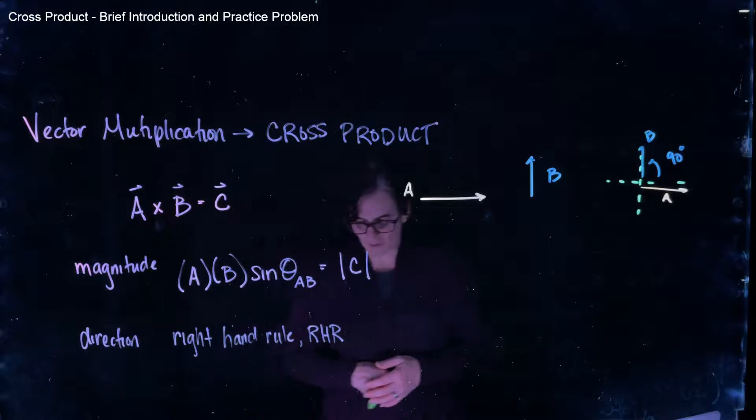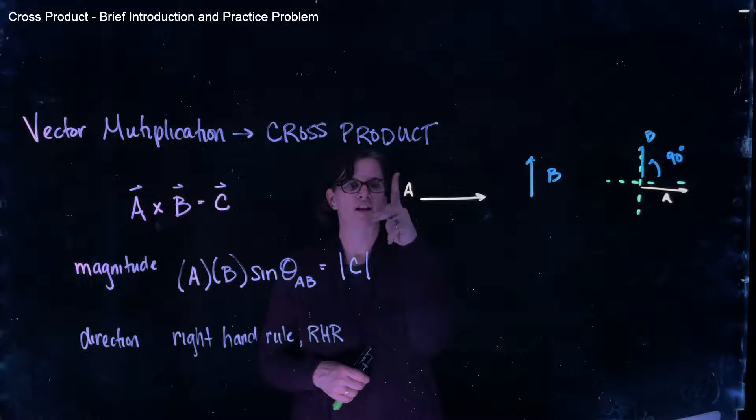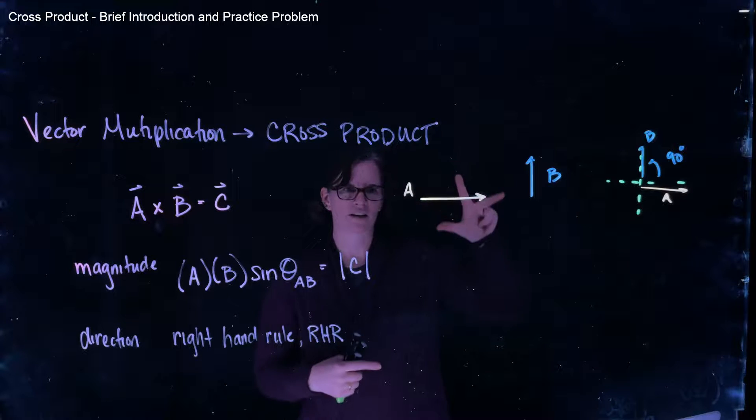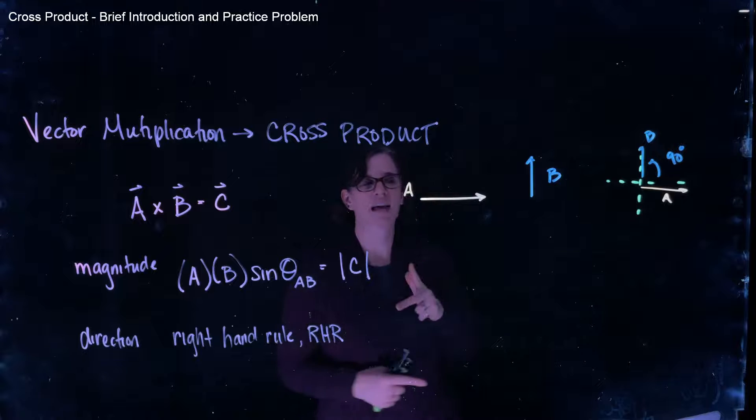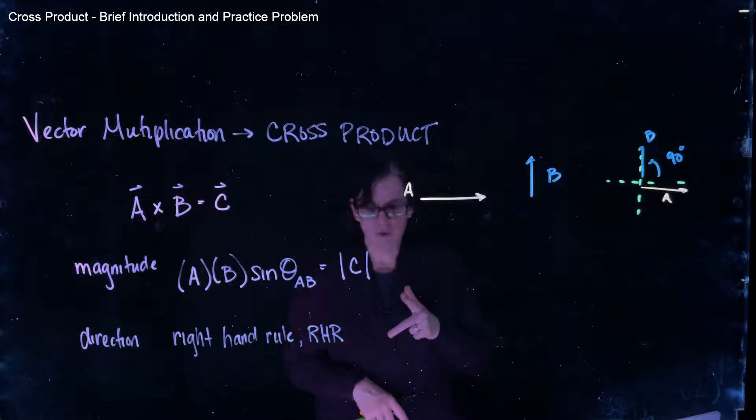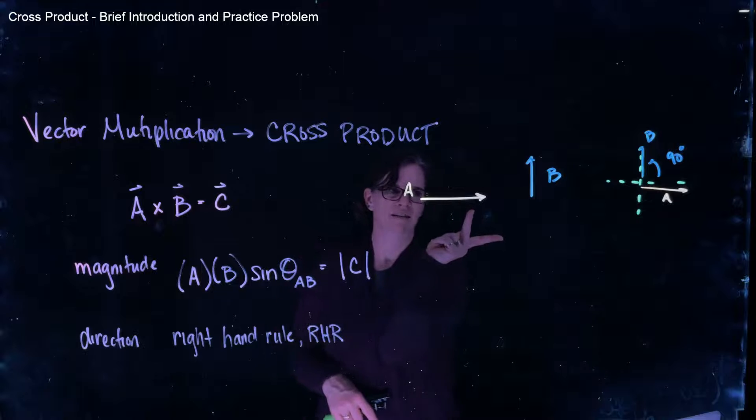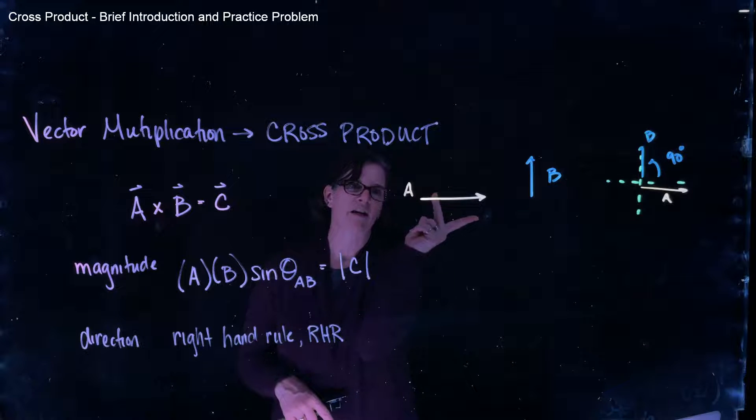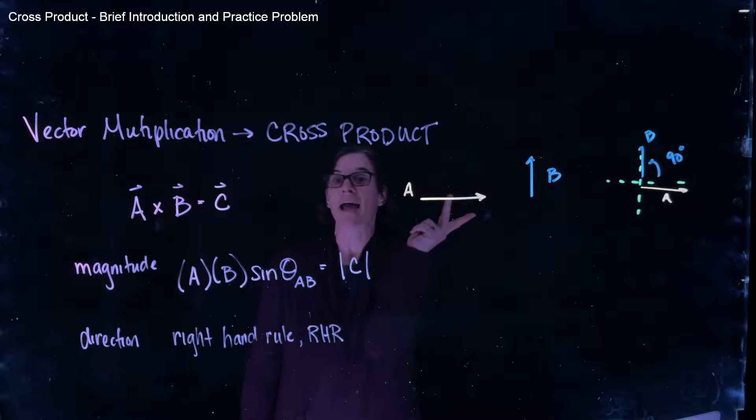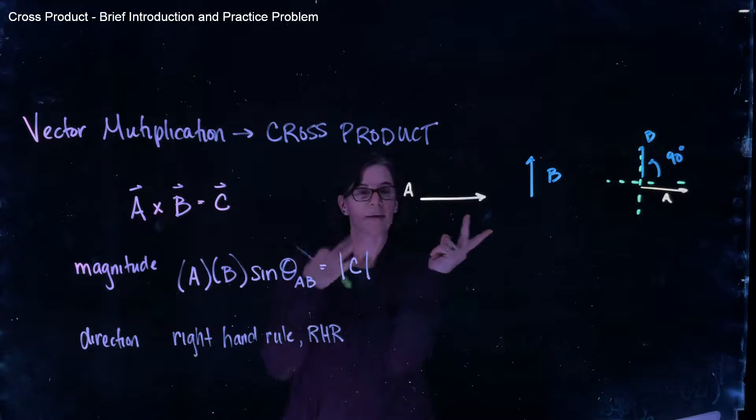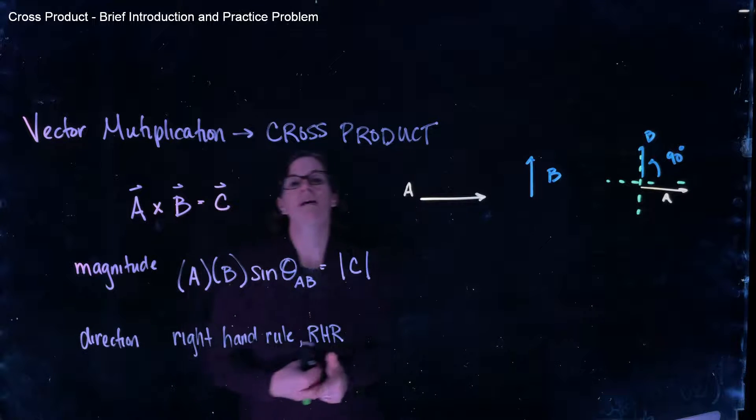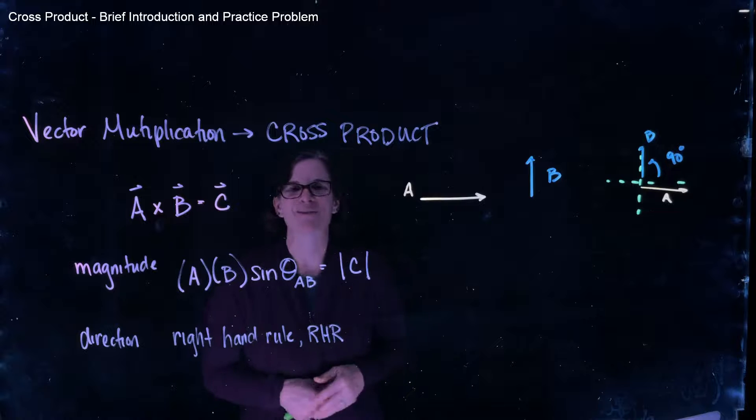Another method is if we take our pointer finger and our middle finger and our thumb. And we make an L between our pointer finger and our middle finger. And our thumb is orthogonal to that. Again, with your right hand. If we put our pointer finger in the direction of A, our middle finger points in the direction of B, our thumb will point in the direction of C. So again, in my image, it's towards me. If you put it on your paper, it should be pointing up just like it was in the first method.